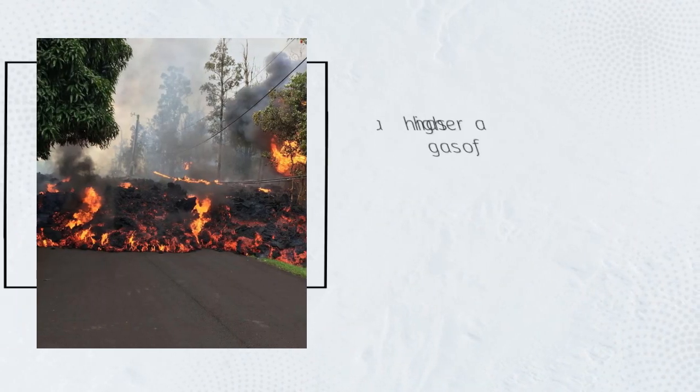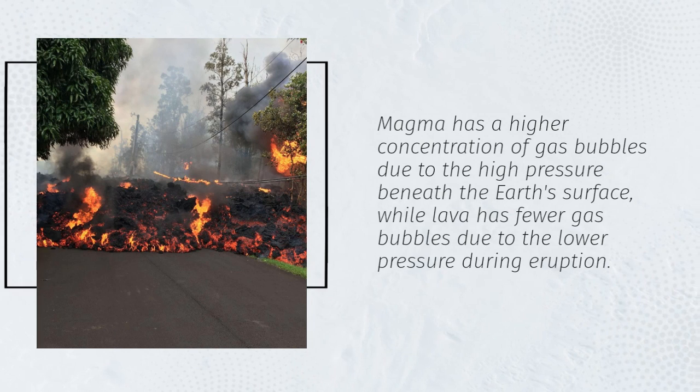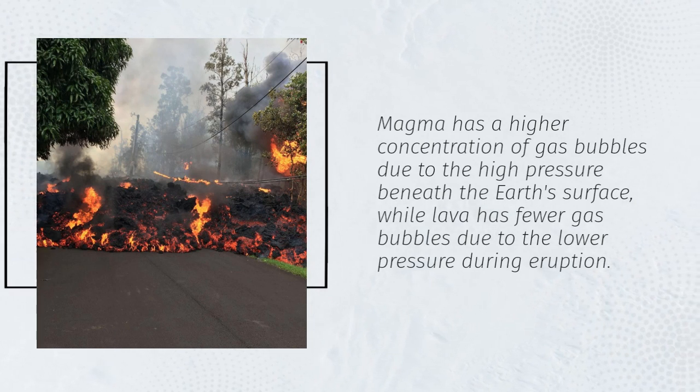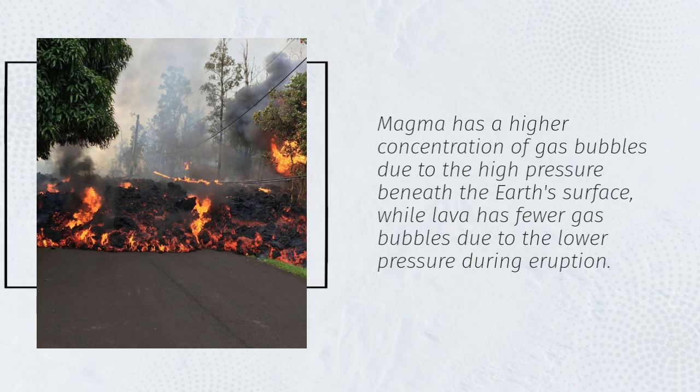Magma has a higher concentration of gas bubbles due to the high pressure beneath the earth's surface, while lava has fewer gas bubbles due to the lower pressure during eruption.